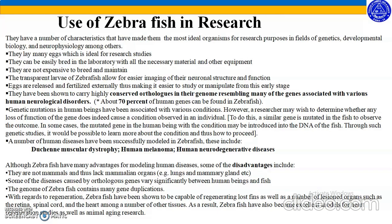About 70% of human genes can be found in zebrafish. Genetic mutations in human beings have been associated with various conditions; however, a researcher may wish to determine whether any loss of function of a gene does indeed cause the observed condition. To do this, a similar gene is mutated in the fish to observe the outcome. In some cases, the mutated gene from the human with the condition may be introduced into the DNA of the fish. Through such genetic studies, it is possible to learn more about the condition and how to proceed. A number of human diseases have been successfully modeled in zebrafish.